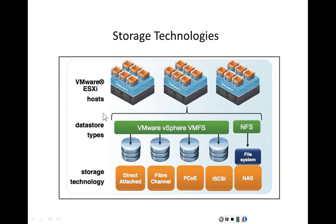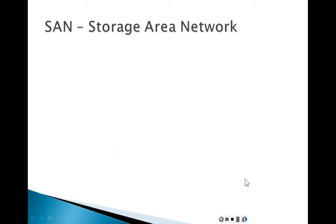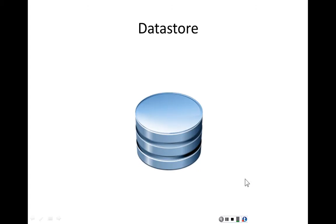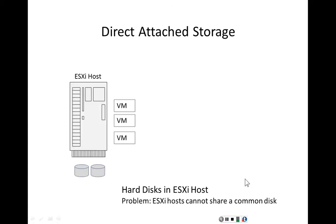ESXi supports different storage technologies: direct attached storage, fiber channel, fiber channel over Ethernet, iSCSI, and network attached storage using NFS. Let's start with a review of storage area networks. A datastore is a place where data is stored. Direct attached storage means the hard disks are inside the ESXi host — there is no external disk array or external RAID array.